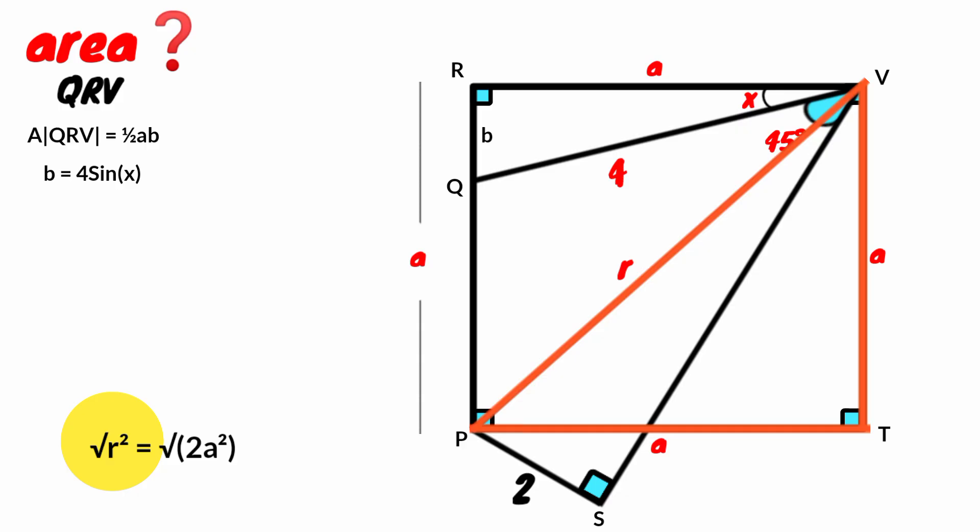Take the square root of both sides of the equation. Square root of R squared is R. Square root of 2A squared is A root 2. So R equal to A root 2. That is, the length of this diagonal is A root 2.